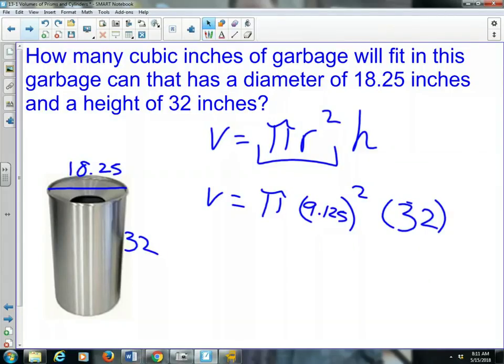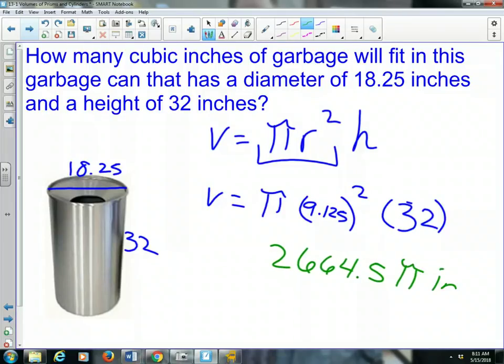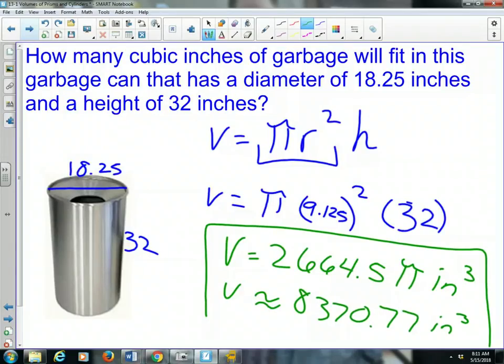So let's answer in both ways, with approximate and with exact. So in terms of pi, 9.125 times 9.125 times 32 is 2664.5 times pi, and that is in cubic inches. There is our exact volume, 2,664.5 pi inches cubed. Now if we multiply by the pi button, you would get an approximate answer for the volume. The volume is approximately 8,370.77, again, cubic inches. That's how much trash fits inside this garbage can.